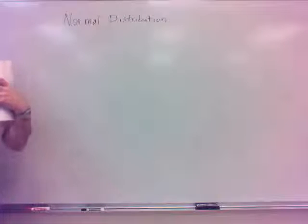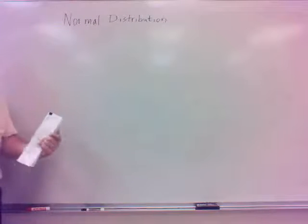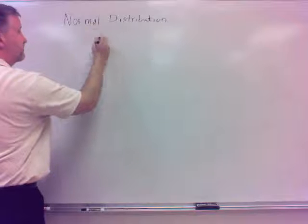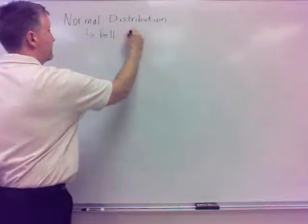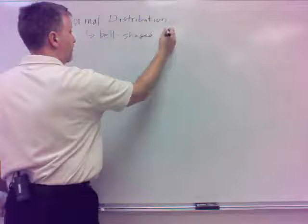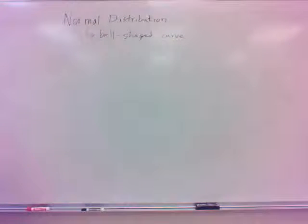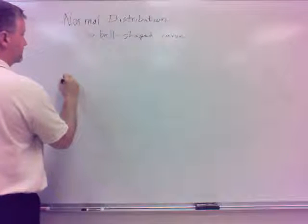And kind of the distinction of a normal distribution from another distribution is that the normal distribution has what's called a bell-shaped curve. In other words, the graph of a normal distribution has the shape of a bell. So it's the bell-shaped graph or curve. That's the distinction to be made between it and other distributions.